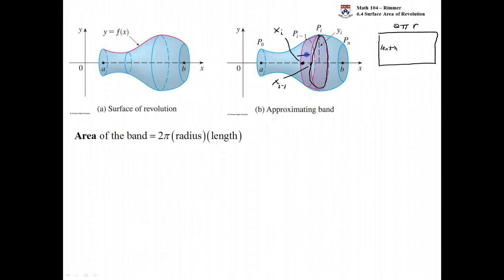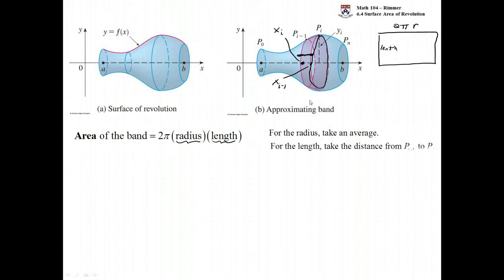The area of this particular band needs to be represented in terms of the variables we have. We need to figure out what to call the radius and what to call the length. For the radius, we take an average: we have the y-value at the left endpoint and the y-value at the right endpoint. We call those y sub I minus one and y sub I, added up and divided by two — that's an average radius.